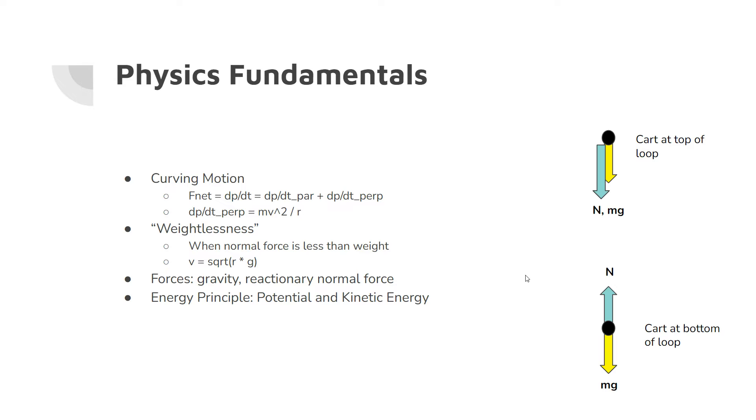And this happens when normal force is less than the weight. When normal force is less than the weight, especially when the cart is at the top of the loop, gravity is essentially the only force that is there. And when you have gravity equal to the centripetal force, gravity makes up the centripetal force. We have v is equal to square root of r times g. And that kind of also gives the idea of the minimum speed necessary in order to traverse the loop.